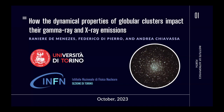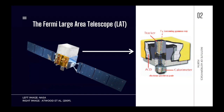Before talking about globular clusters, I'll give a short introduction on the Fermi Large Area Telescope, one of the main instruments used in this work. The Fermi-LAT is divided into three main components: the tracker, the calorimeter, and the anti-coincidence shield. When a gamma ray enters the telescope, it interacts in one of the layers of the tracker and generates a pair of electron and positron that leaves an ionized path, allowing reconstruction of the incoming direction of the original photon.